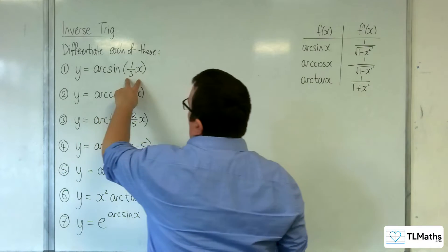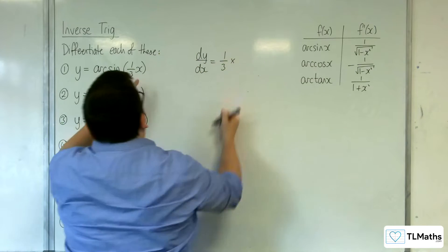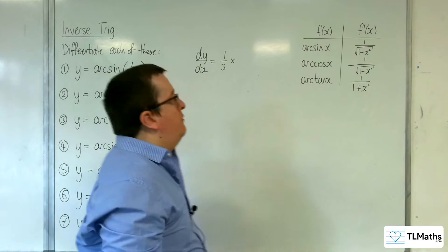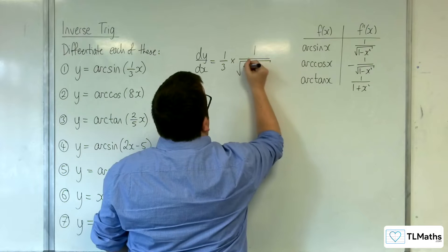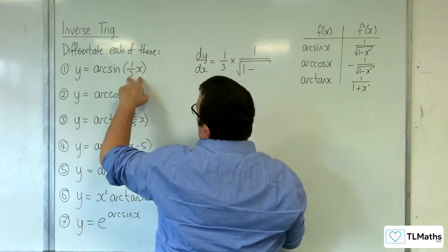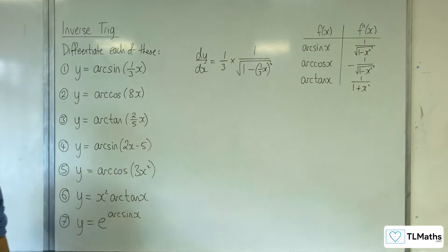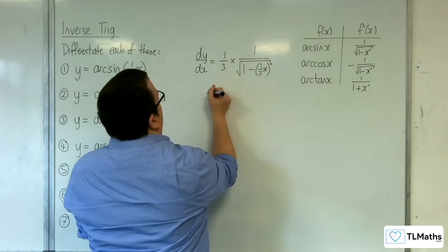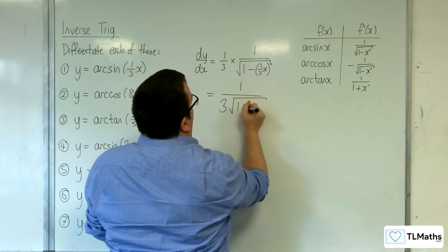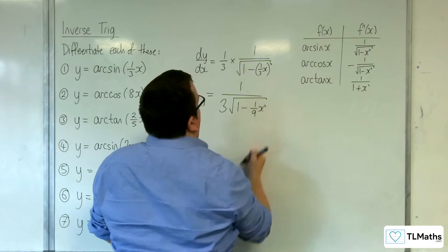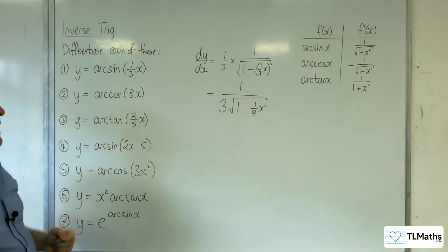The derivative of the inside is one third, so one third comes out the front. Arc sine differentiates to one over the square root of one minus x squared. So we'll have one over the square root of one minus (one third x) squared. Simplifying, that's one over three lots of the square root of one minus one ninth x squared. That is the derivative of arc sine of one third x.